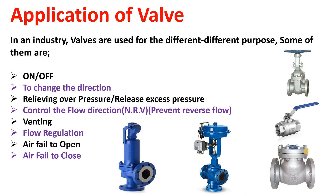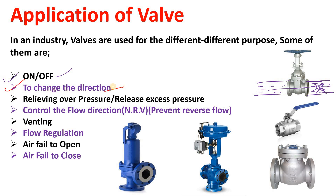What are the applications of valves in industry? The first application is on or off — whether you want the fluid to flow or not. If it is on, fluid flows; if off, fluid does not flow. You can use a valve in a pipeline simply for on/off purposes. Another application is to change the direction — you can direct the flowing fluid using a valve.